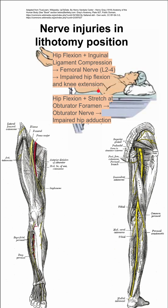Another injury is hip flexion and stretch at the obturator foramen. Your hip is flexed, pulling on the obturator nerve through the obturator foramen, and you can have impaired hip adduction.